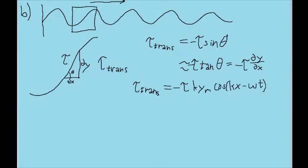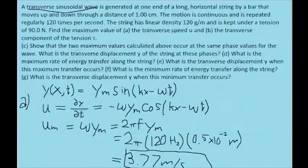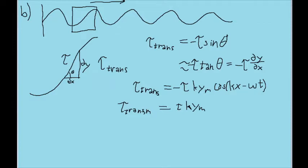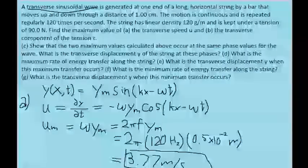Now we have the function, but we need the maximum. Doing the same thing as part A, the function is maximized when the cosine has magnitude one and cancels the negative sign — that is, when cosine of kx minus omega*t equals negative one. So the maximum transverse tension is tau times k times y_sub_m. We have both tau and y_sub_m: tau is 90 newtons from the problem, and y_sub_m is 0.5 times 10 to the negative 2. We still need k, the wave number.